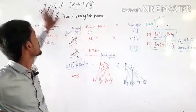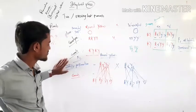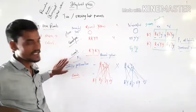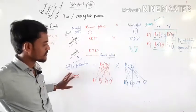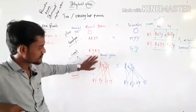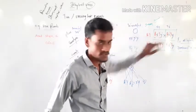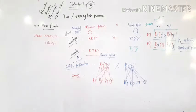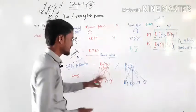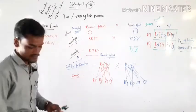The recessive characters are not expressed in F1. Then we take the F1 generation and perform selfing — that is, self-pollination. Through selfing, gamete formation occurs again in F1, and from those gametes we will fill the Punnett square for the F2 hybrid cross. Let's draw the gametes in the Punnett square box.